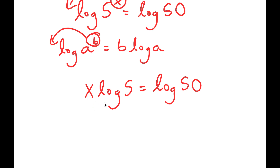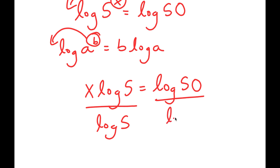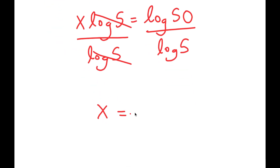From here, I can divide both sides by log 5. These two cancel out, and I get x is equal to log 50 over log 5.